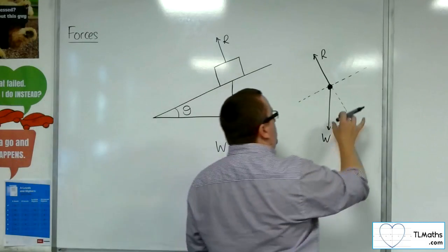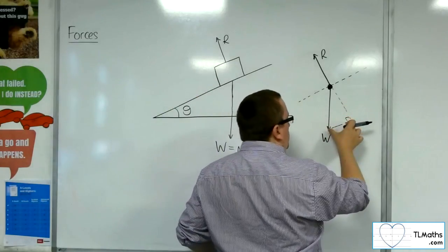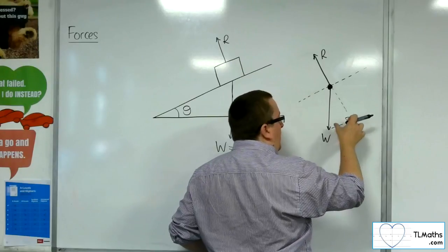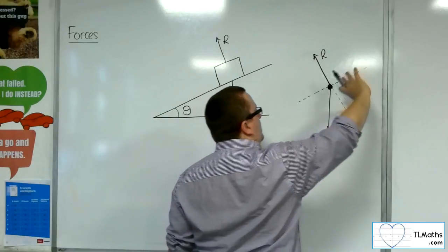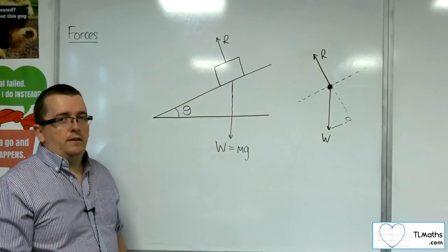So I instead draw a right-angled triangle down here so that I can divide the weight into this opposite length, this parallel to the plane, and this adjacent side, which is going to be perpendicular to the plane.